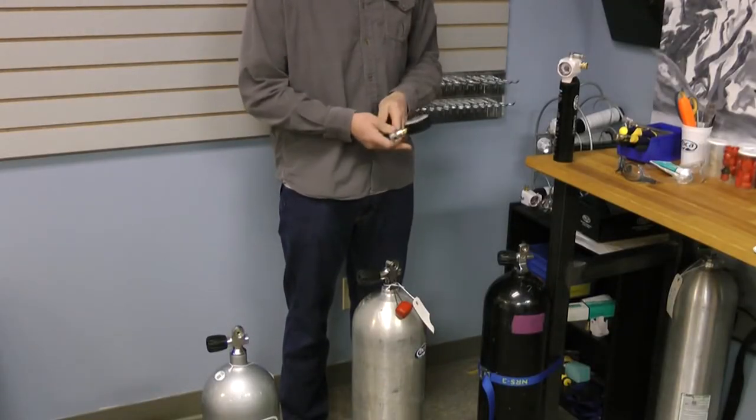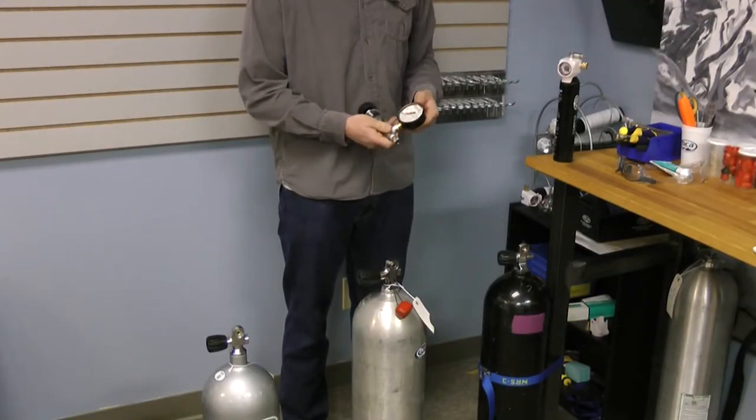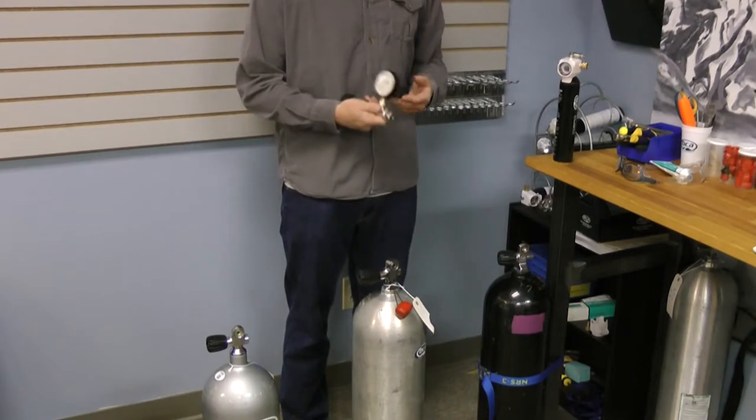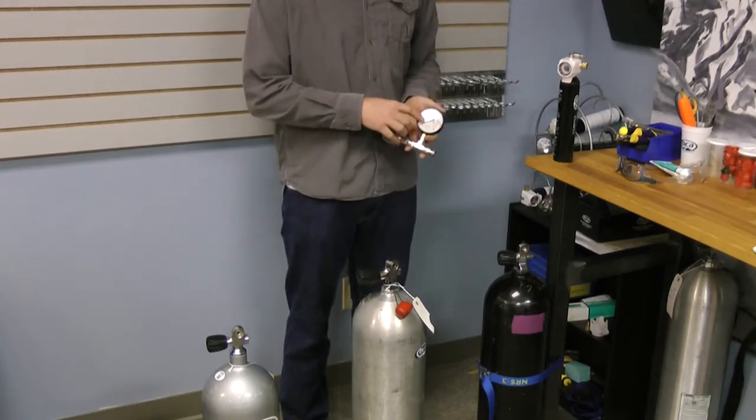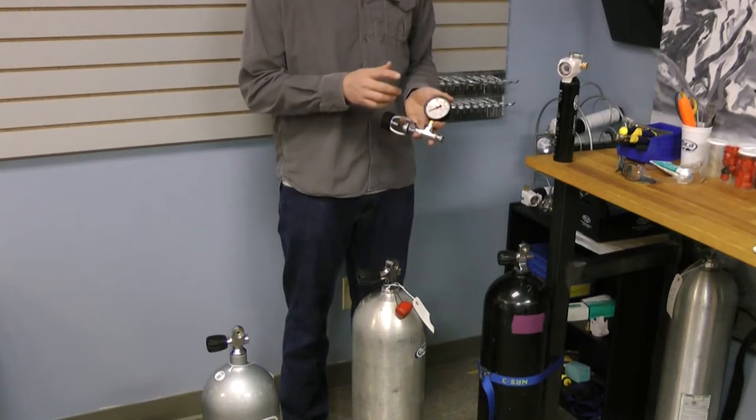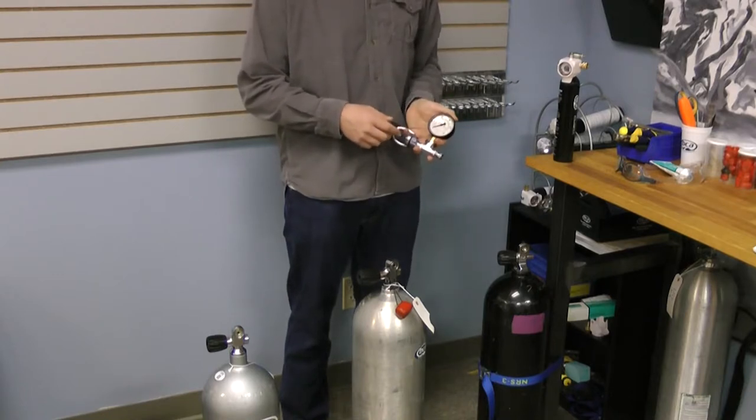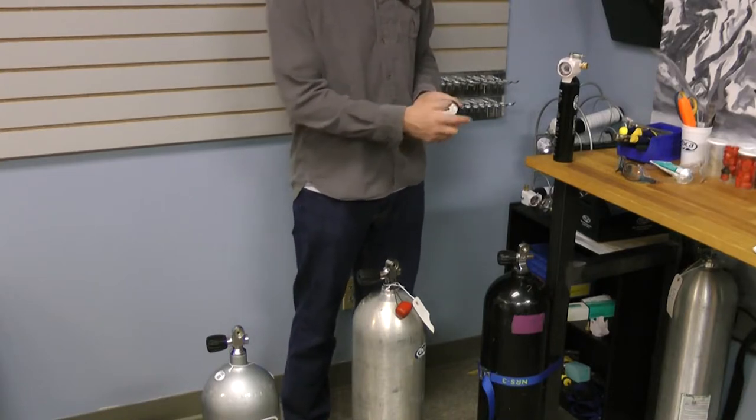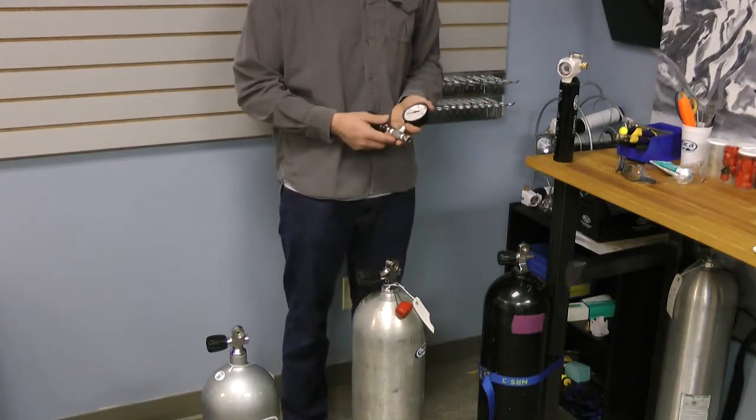What we'll do is take our adapter. This is what's called a scuba paintball adapter. It comes with a secondary gauge. So basically you're able to confirm the pressure that's in the line here is consistent with what's being shown on the cylinder.